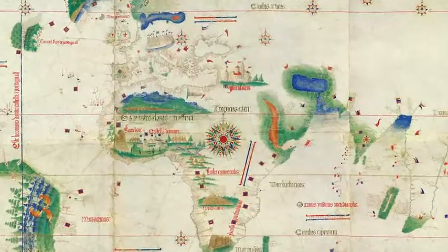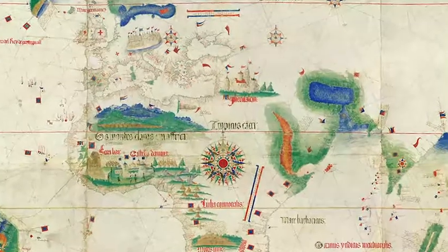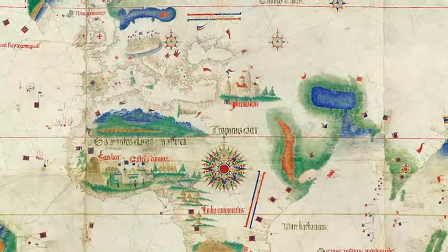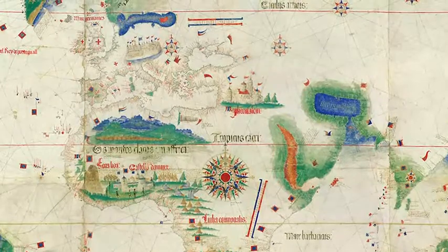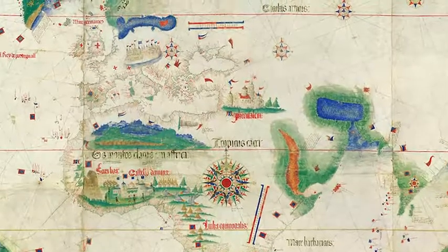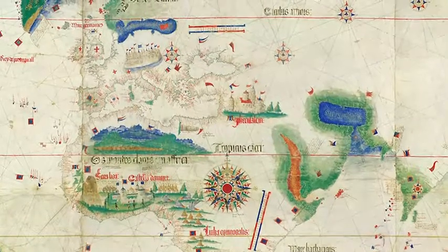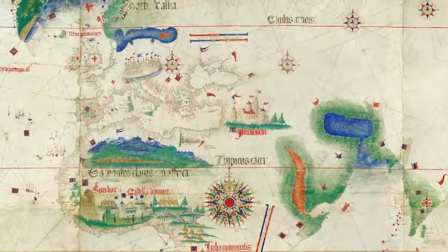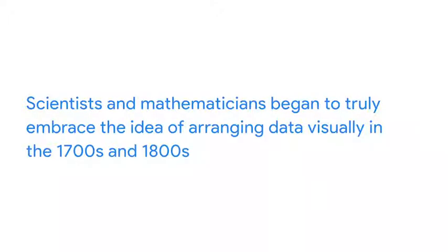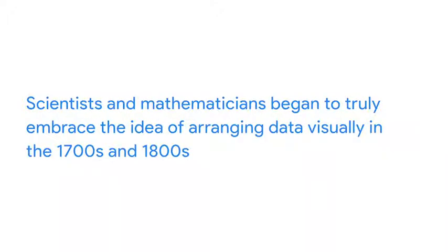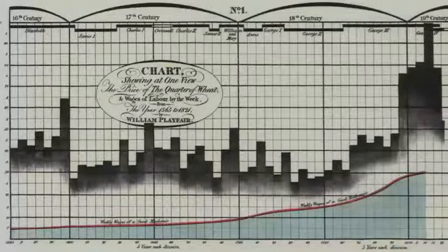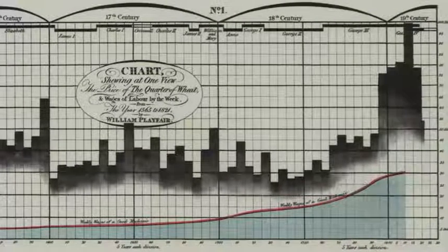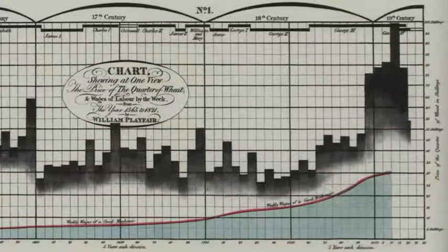Visualizing data began long ago with maps, which are the visual representation of geographic data. This map of the known world is from 1502. Map makers continued to improve their visualizations as new lands were charted. New data was collected about those locations, and new methods for visualizing the data were created. Scientists and mathematicians began to truly embrace the idea of arranging data visually in the 1700s and 1800s. This bar graph is from 1821, and it doesn't look too different from bar graphs that we see today.